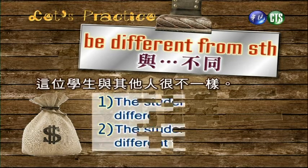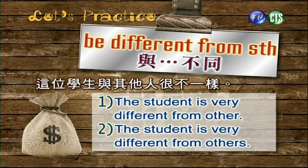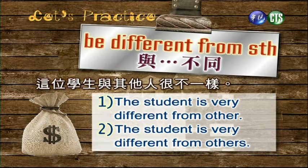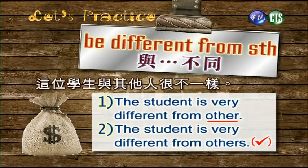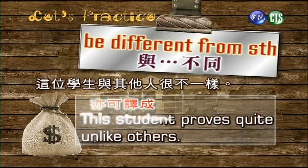这位学生与其他人很不一样。The student is very different from others. 哪边有错？We need the plural here. If singular you'd have to say the other. 有用复数叫others，如果单数是the other。另外翻翻看：This student proves quite unlike others. unlike是不像的意思。